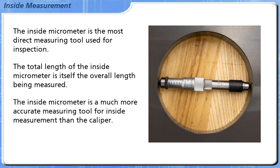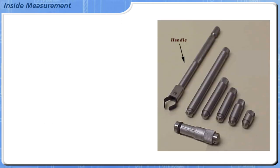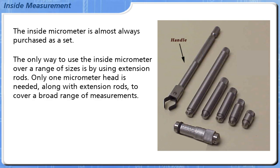The inside micrometer is a much more accurate measuring tool for inside measurement than the caliper. The inside micrometer is almost always purchased as a set.